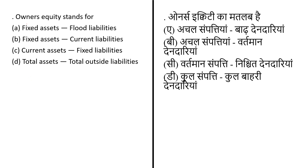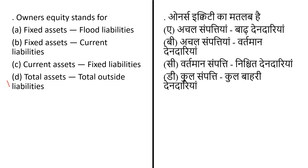Owner's equity stands for — options: (A) fixed assets minus flood liability, (B) fixed assets minus current liability, (C) current assets minus fixed liability, or (D) total assets minus total outside liability. Owner's equity can be calculated by summing all business assets and deducting all liabilities such as debt, wages, salaries, loans, and creditors. So the answer is option D — owner's equity stands for total assets minus total outside liability.